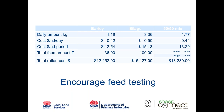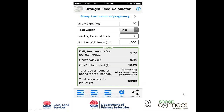The app also has a question mark button in the top right-hand corner which may answer questions you have. There's information about feed testing including a phone number and website. It also covers important warnings such as chemical residues — it's important everyone is aware of the risk of residues. If you're grazing failed crops or buying feeds, consider what chemicals they've been sprayed with and whether there's any residue risk. Take heed of those warnings as you use the app.